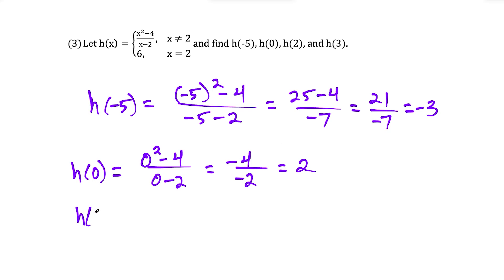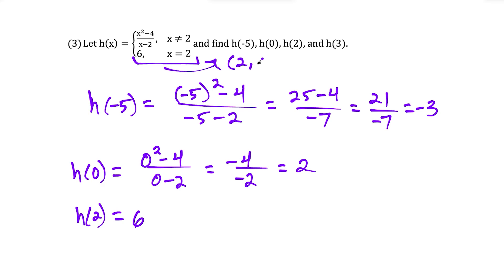For h of two, we use the bottom row because x equals two — two equals two is a true statement. We can't use the top row since two is not equal to two is false. So we plug in x equals two at the bottom, and what the function says is the y value equals six. The bottom row gets used exactly once, and it's really just saying that the point (2, 6) is on the graph of h of x.